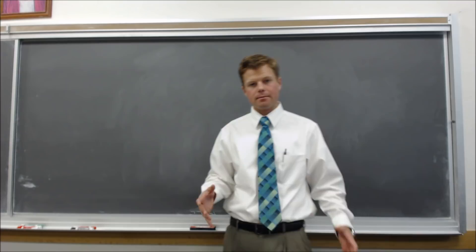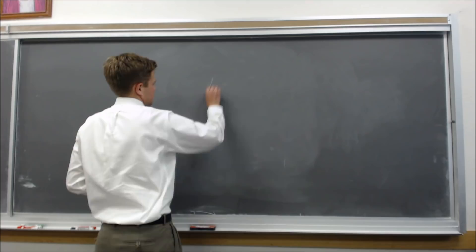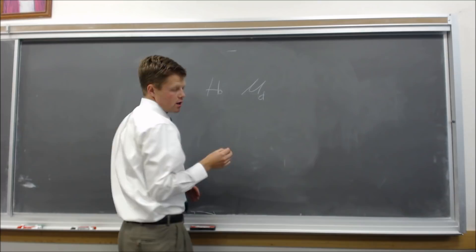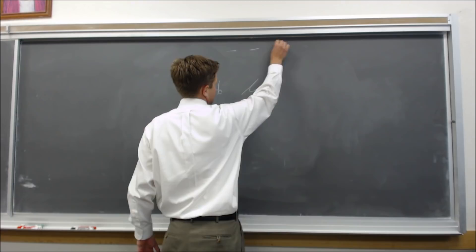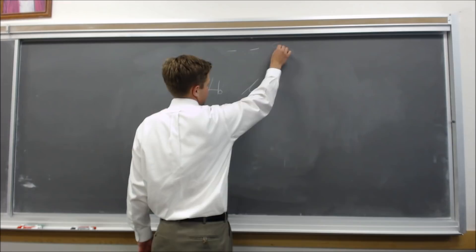Part B: State the null and alternative hypothesis. The null hypothesis is that mu of the difference (mu-sub-D) equals 0, because we're going to have three columns: a pre-time, a post-time, and then the difference between these two. If they went faster, we'd expect the time to be shorter. The null being equal to 0 means nothing changed.